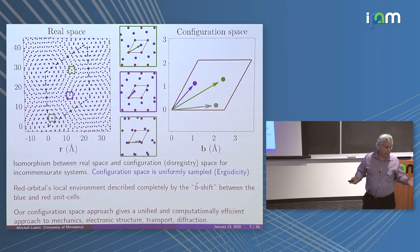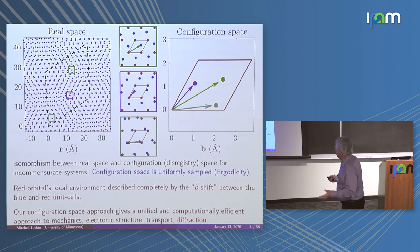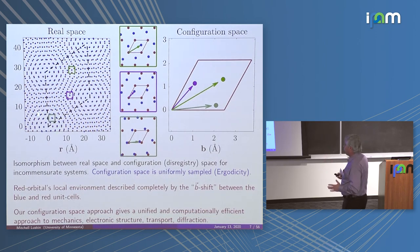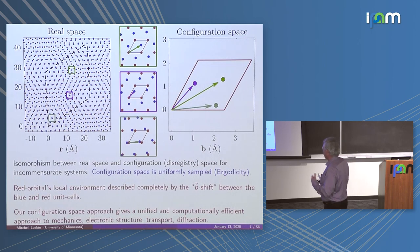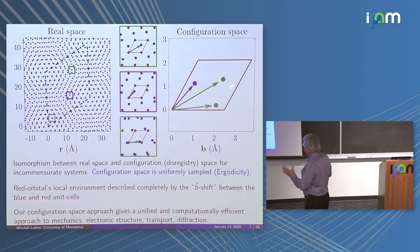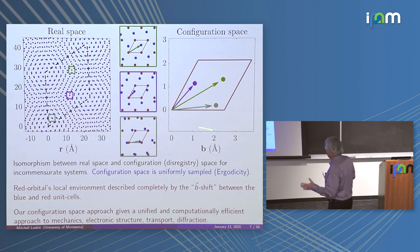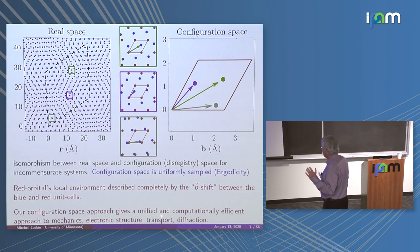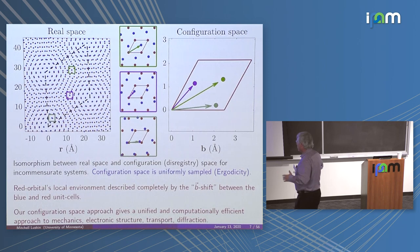We can describe the local environment through this disregistry or local configuration, and this approach has led us to give a uniform and computationally efficient approach to mechanics, electronic structure, transport, diffraction, et cetera. So instead of integrating over a Brillouin zone, we're using a similarity transformation of our Hamiltonian into a new set of coordinates — the configuration space.